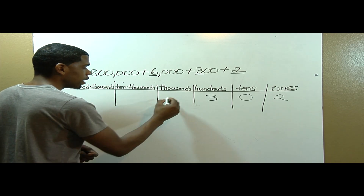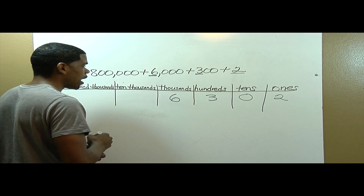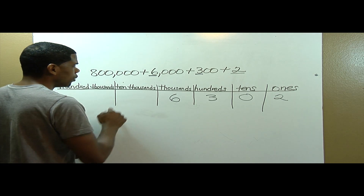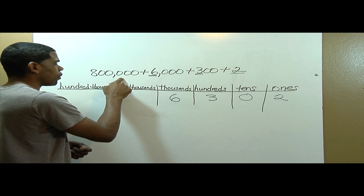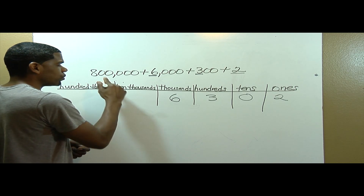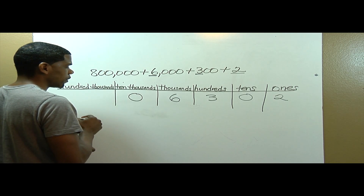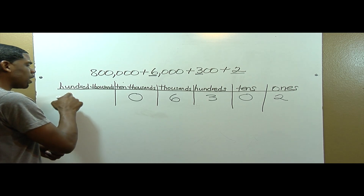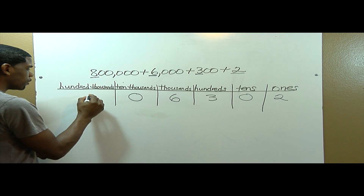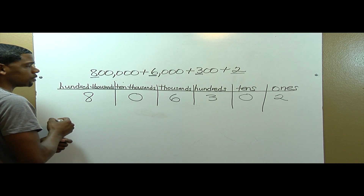I'll underline the number six and put six in the thousands place. How many ten-thousands do I have? Notice my next number in expanded form is eight hundred thousand, so I have no ten-thousands — I'll write zero in that place. How many hundred-thousands do I have? I have eight, so I'll write eight in the hundred-thousands place.